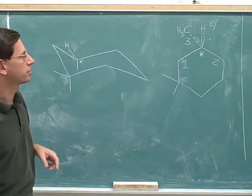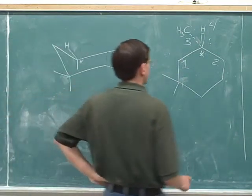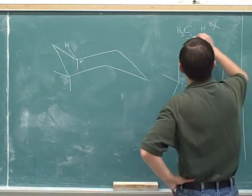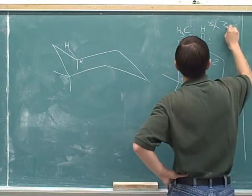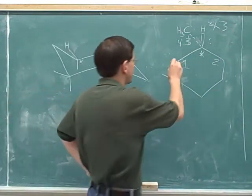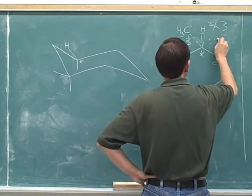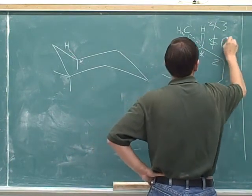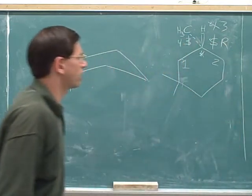Now that we have the priorities, we can see the number four priority is pointing towards us. We need to make a swap so that the number four priority will point away from us. Now the configuration on the page is S. But we made a swap so the true configuration originally was R.